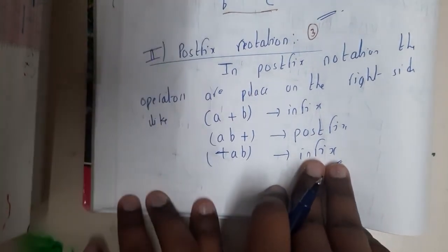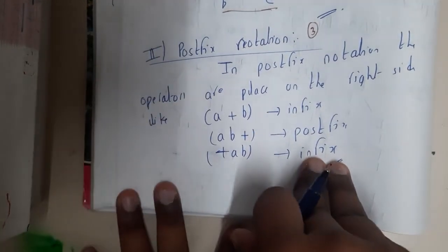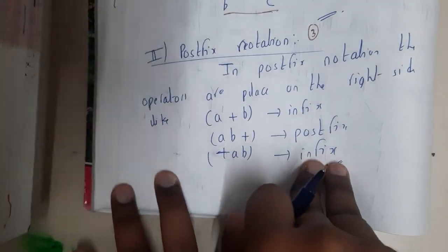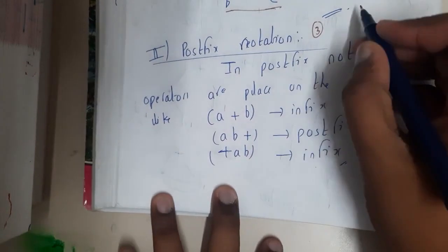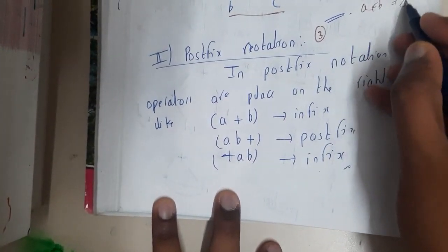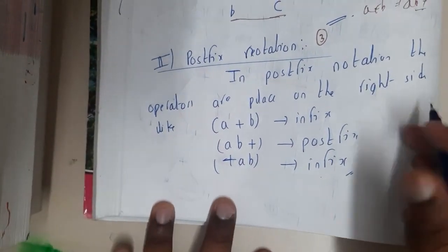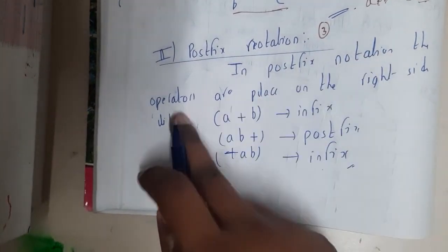Hello guys, we are back with our next lecture. In this lecture, let us go through postfix notation. In postfix notation, the operator will be stored at the end, so a b plus in that way. In postfix notation, the operators are placed at the rightmost side.